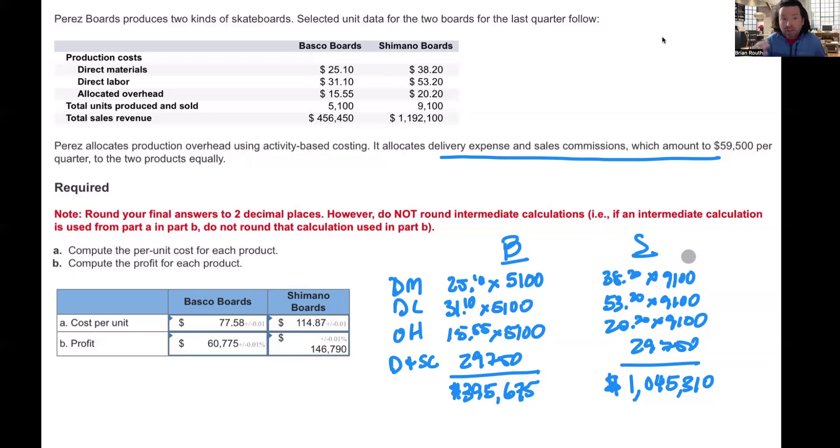Now, again, we haven't answered the question. The question wants us to compute the per unit cost for each product. So now that we've got the total cost of production, we can simply divide that by the number of units produced, and that will give us the cost per unit. So if you divide the Basco by the 5,100 and the Shimano by the 9,100, that will give you the cost per unit. So you should get $77.58 for the Basco, and you should get $114.87 for the Shimano.